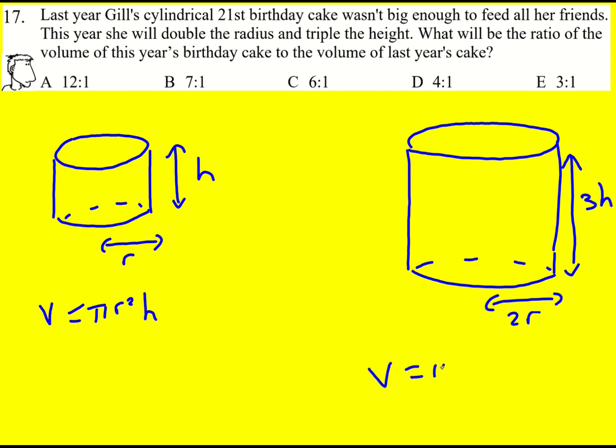So now the volume becomes pi times 2r squared, we have to square the whole thing, multiplied by 3h. This equals 4 pi r squared times 3h, in fact, 12 pi r squared h.